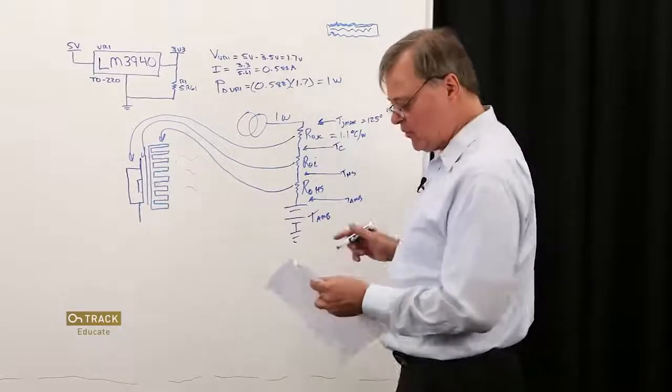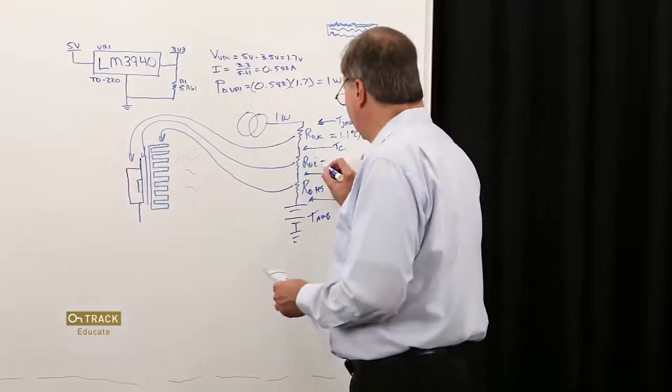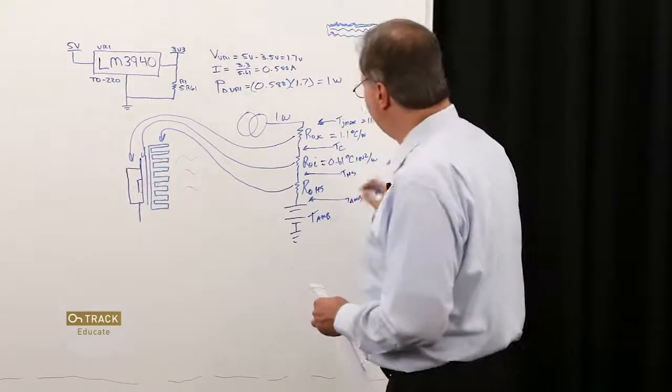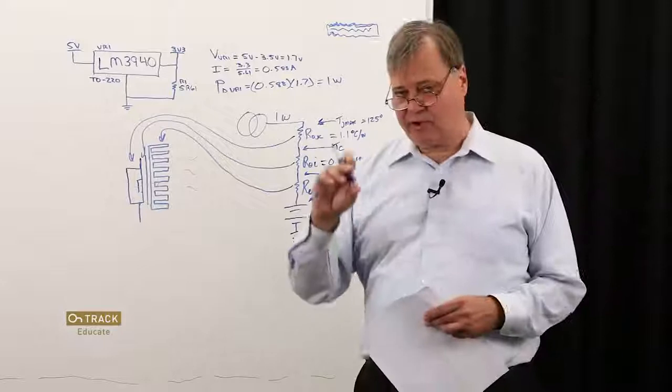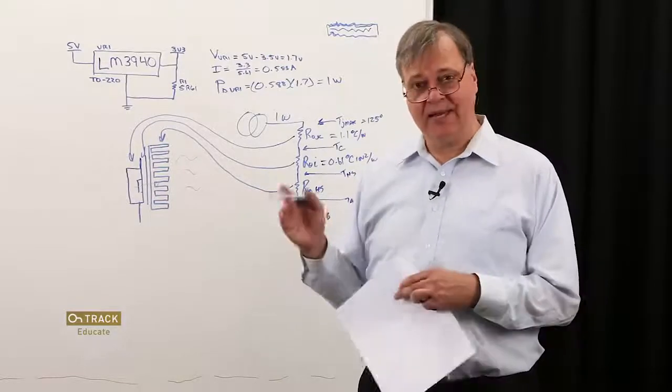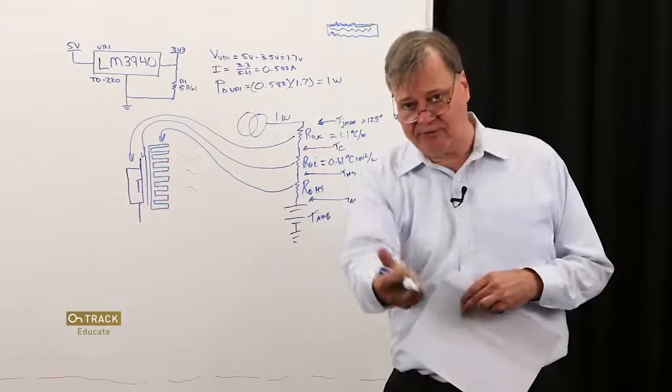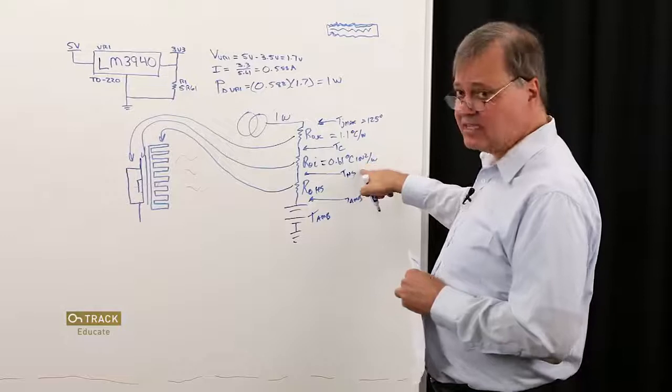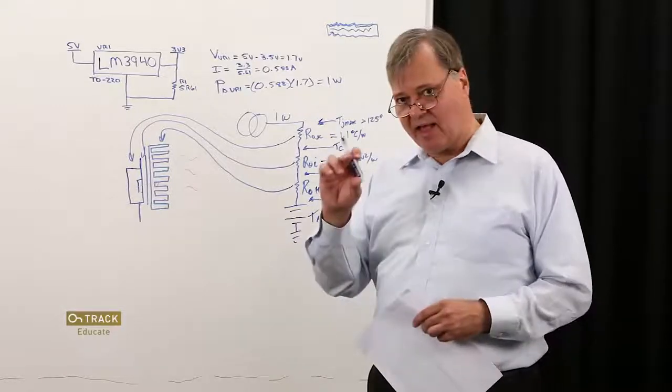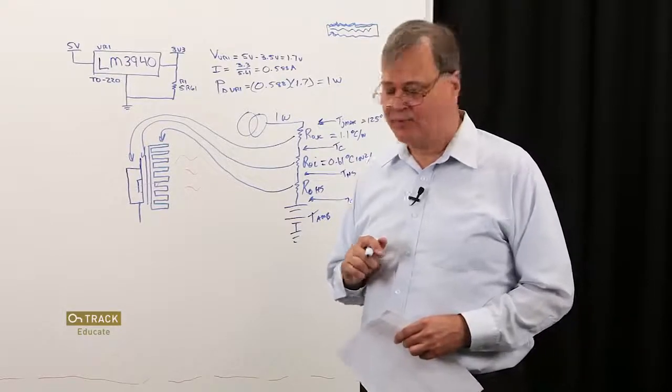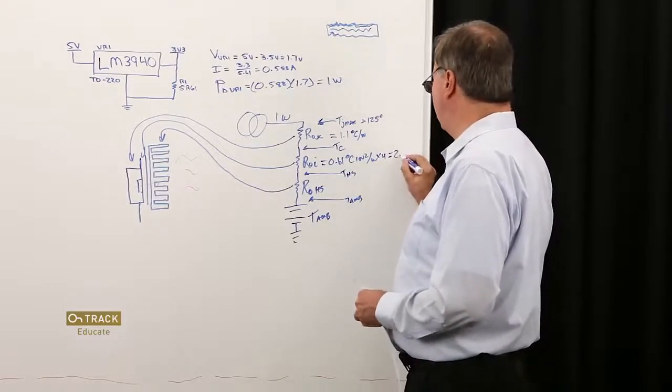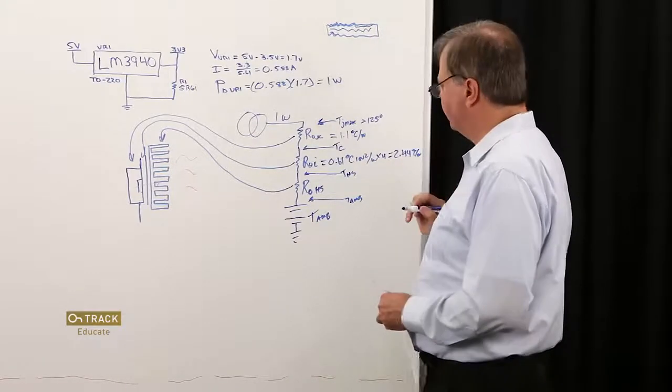The published value for the thermal resistance of this material is 0.61 degrees C inch squared per watt. This is assuming that the heat is transferring through one square inch of area. You remember from the last episode when we started developing our thermal resistance models, we had to consider the area over which our heat flow was being conducted. Well, that's what this accounts for. So, in my little TO220 package, I'm going to guesstimate that the surface area of that little metal tab is about a quarter of a square inch. So, what that means is that this value is going to go up by a factor of four, which equals 2.44 degrees C per watt.